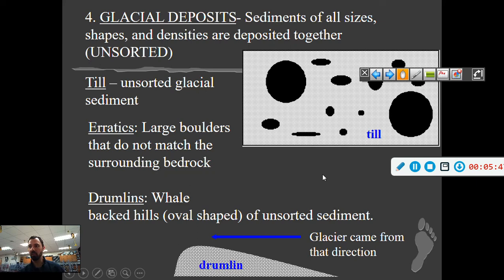Glacial deposits: Sediments of all sizes, shapes, and densities are deposited together, unsorted. Glaciers pick up sediment and drop it in any old way. The name of this unsorted sediment is called till. In this till, sometimes we can have the largest sediment like boulders. These boulders come from somewhere else because they do not match the surrounding bedrock.